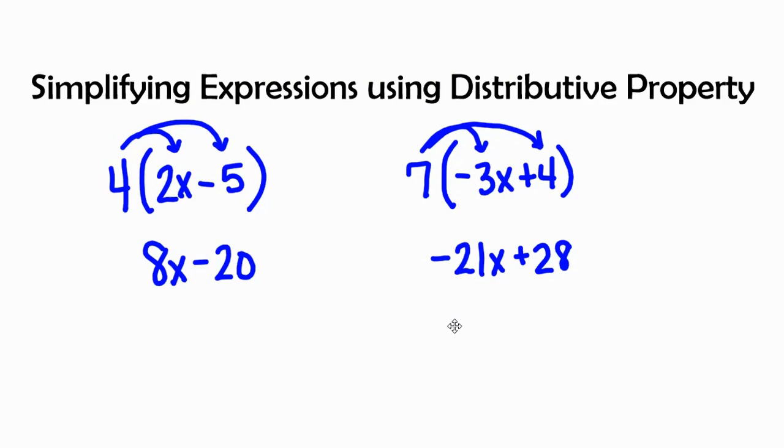Just as a reminder, when you are simplifying expressions using distributive property, when you see the number before the parentheses, it means to distribute and you are going to multiply that number to each term on the inside of the parentheses.